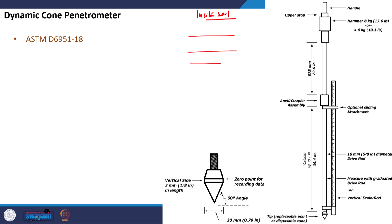In the pavement, let us say this is the subgrade soil. We usually cut a pit here, expose this soil, and then put the penetrometer here and do the specific test as per the procedure. Using the results we will be able to tell about the stiffness of the material, predict the CBR of the subgrade, and so on. In pavement engineering, the DCP test is typically used to estimate the value of CBR of the existing subgrade soil.